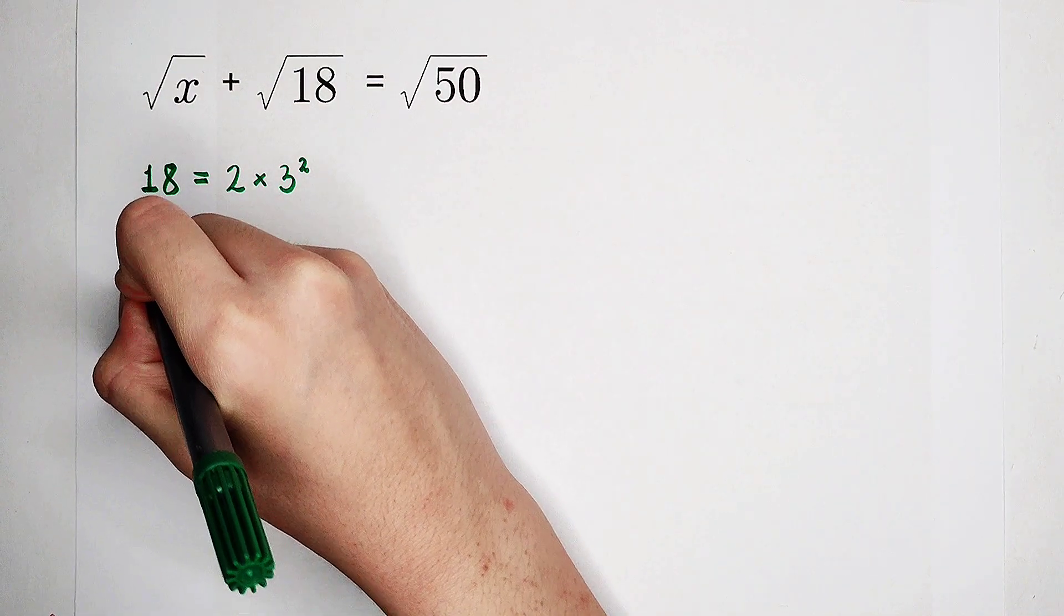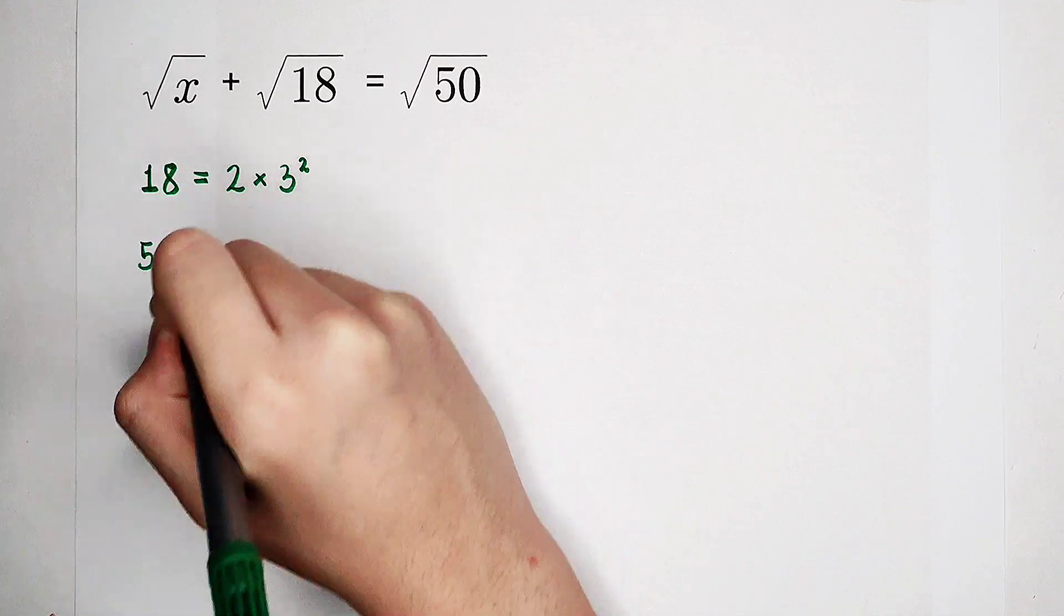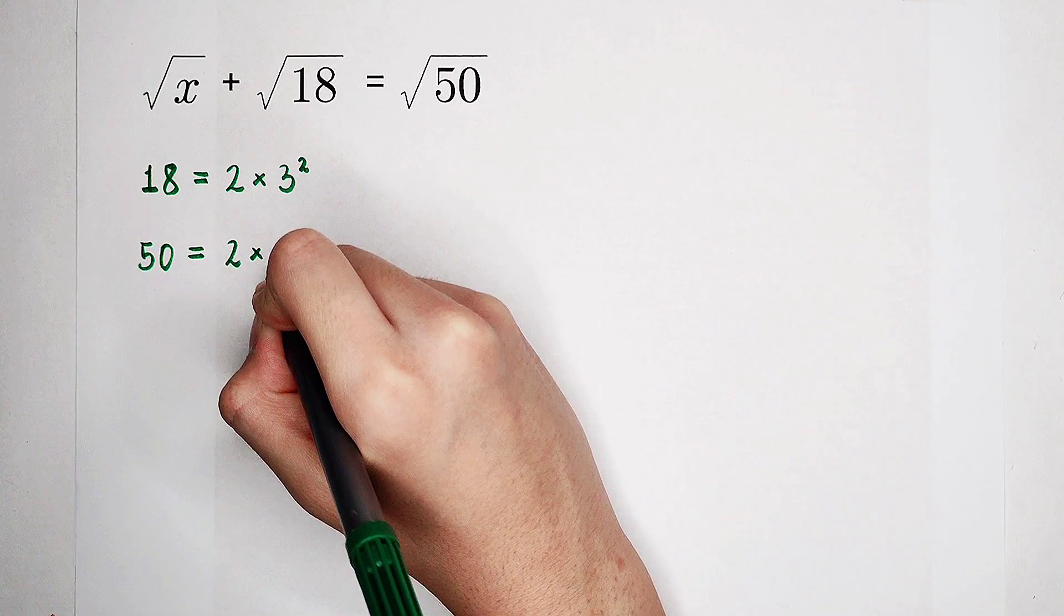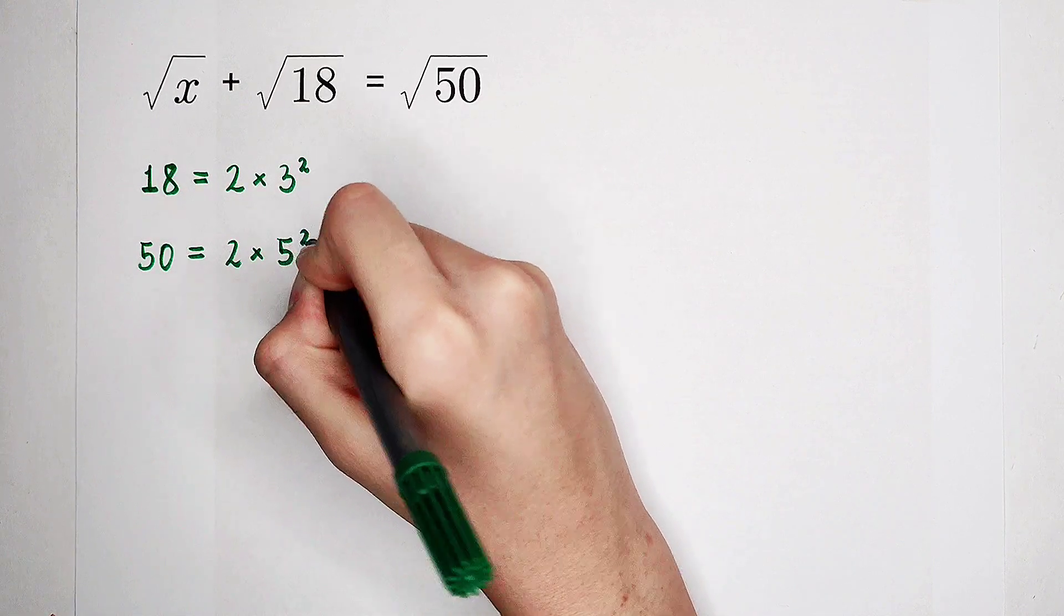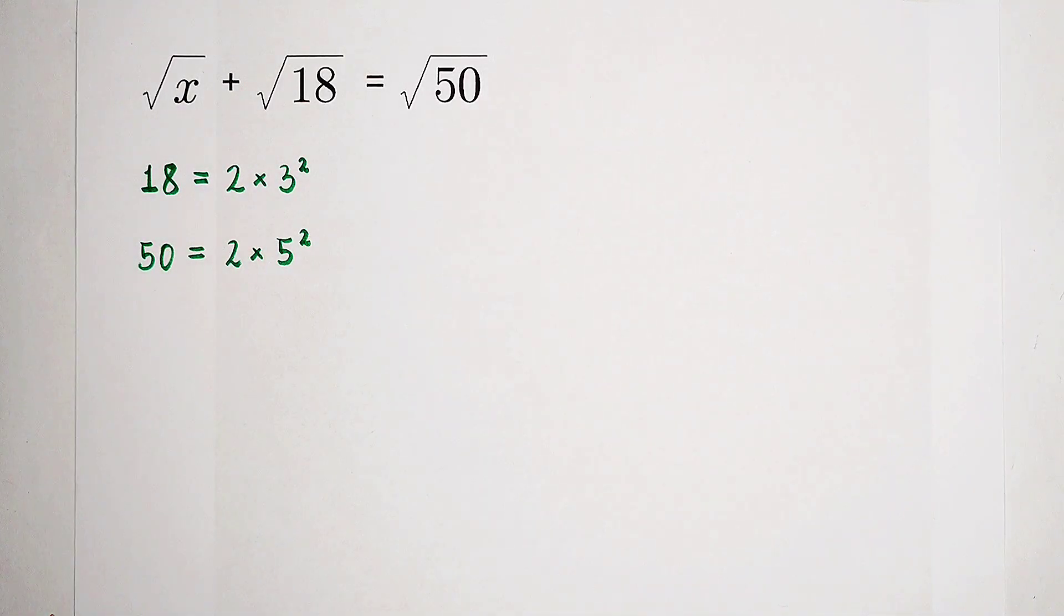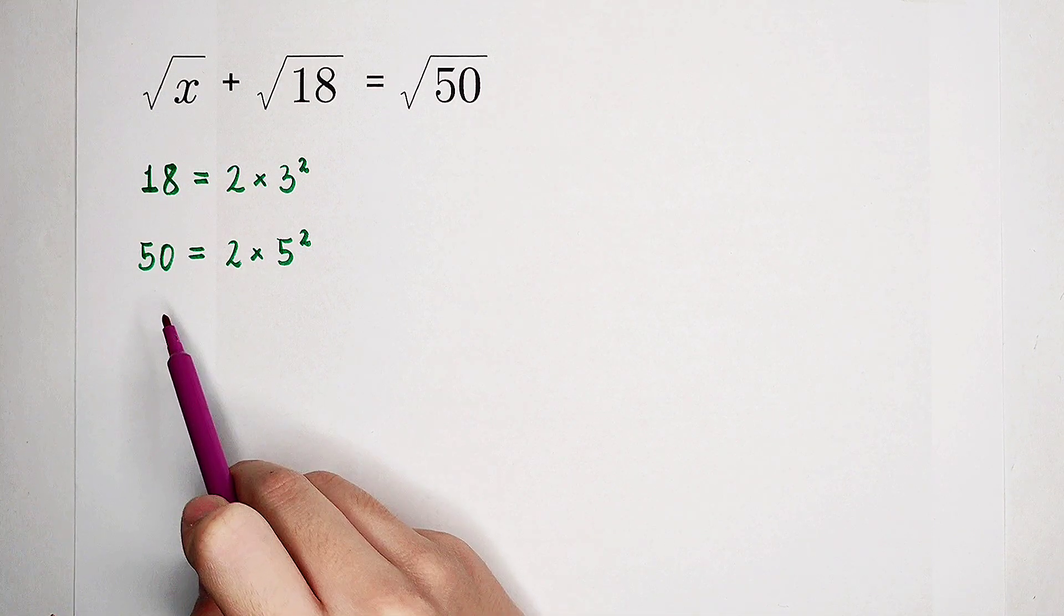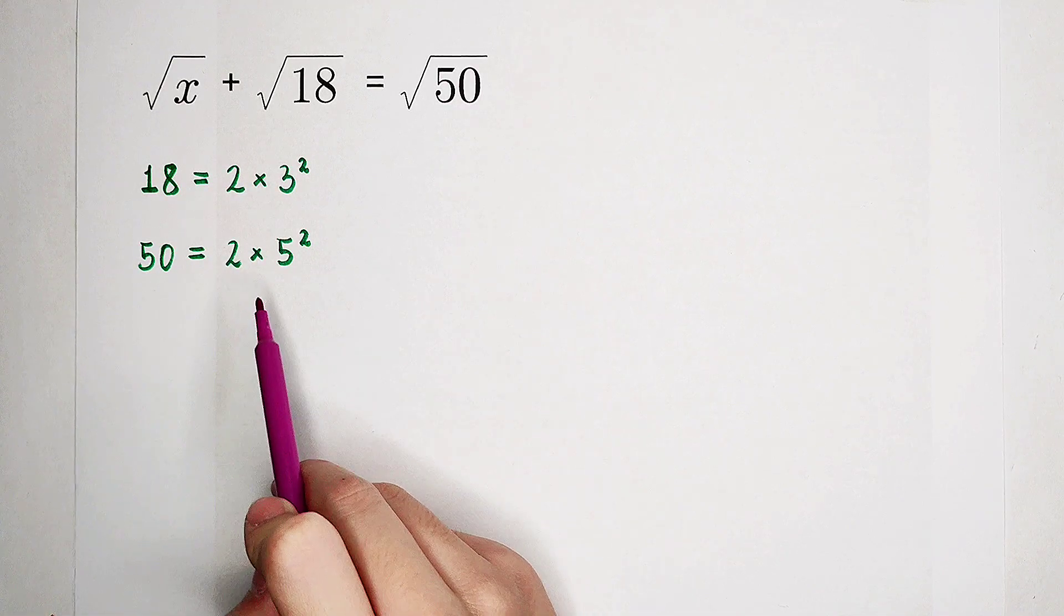This is 18. And 50. 50 is also good. It is 2 times 25. And 25, it is also a square number. It is 5 squared. Not only is 18 nice, but 50 as well. 2 times 3 squared. 2 times 5 squared.